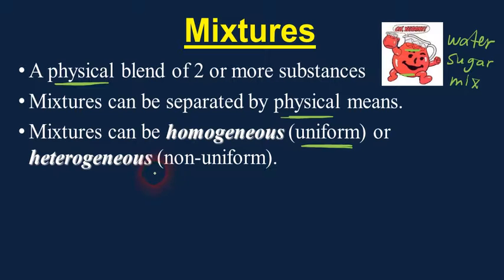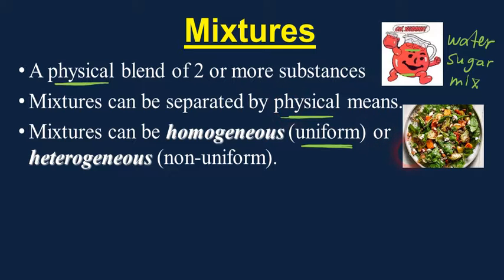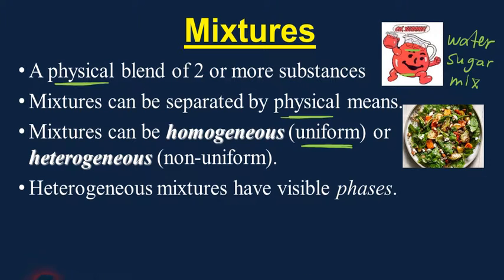On the other hand, heterogeneous mixtures are not uniform all the way through. A good example is a salad. If you look at that salad, you can see that there are different parts — you can see the parts with the naked eye. That's what makes it heterogeneous. The different parts of a heterogeneous mixture are called phases. In your salad, there's a phase of lettuce, a phase of croutons, a phase of tomatoes, and a phase of ranch dressing.